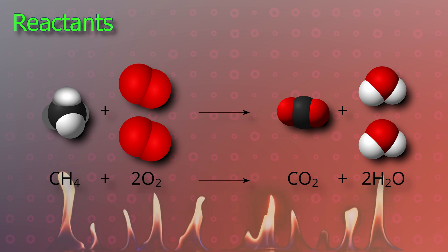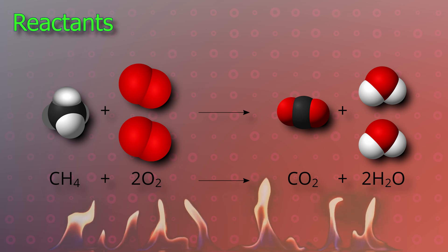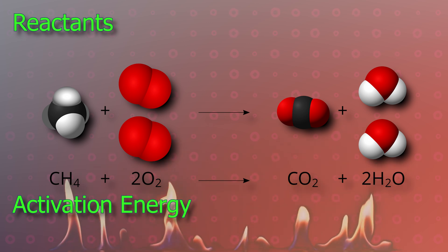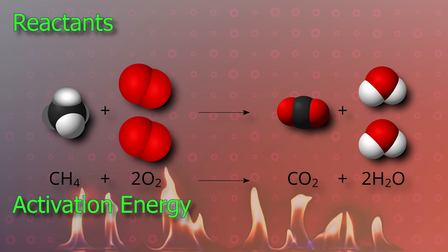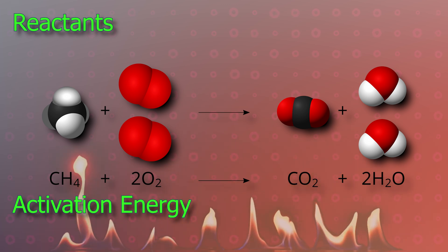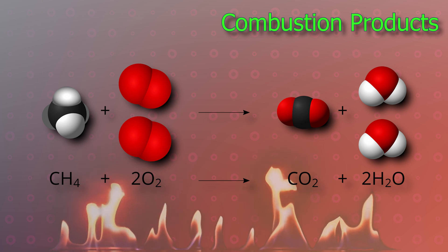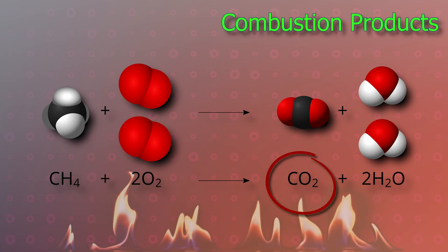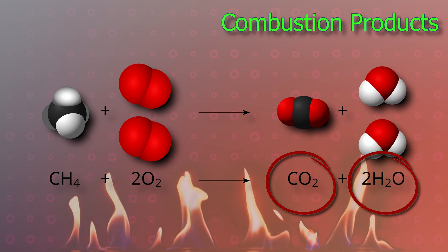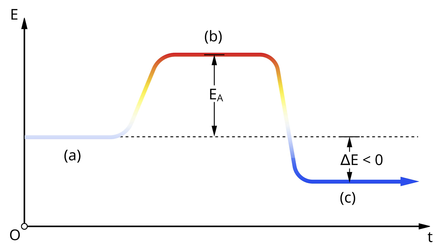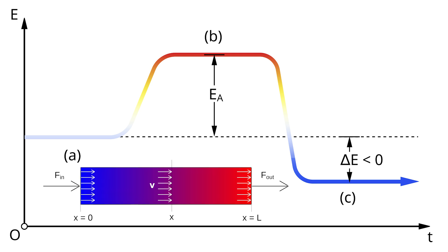This equation represents the balanced chemical reaction for the combustion process of methane with oxygen. Reactants are the substances that participate in the combustion reaction — in this example, methane and oxygen. Activation energy is the minimum energy required to start the combustion reaction, and it can come from an external source like a spark or heat. Combustion products are the substances formed as a result of the reaction; common products include carbon dioxide and water vapor, along with various other gases and particulate matter depending on the fuel composition. Combustion is an exothermic reaction, meaning it releases more energy than it consumes — in the form of heat and light, which are characteristic of fire.